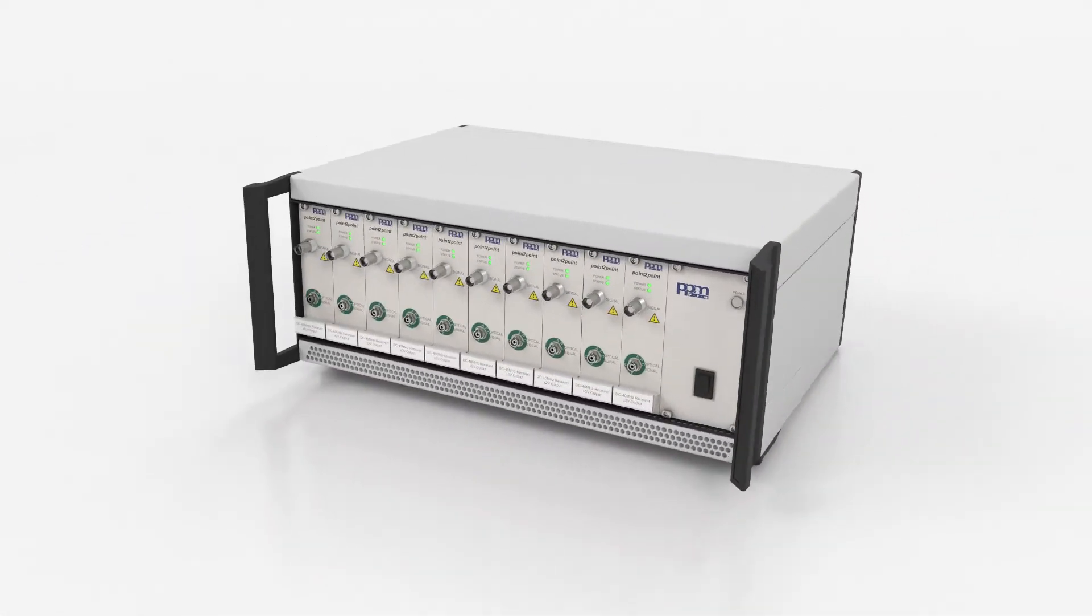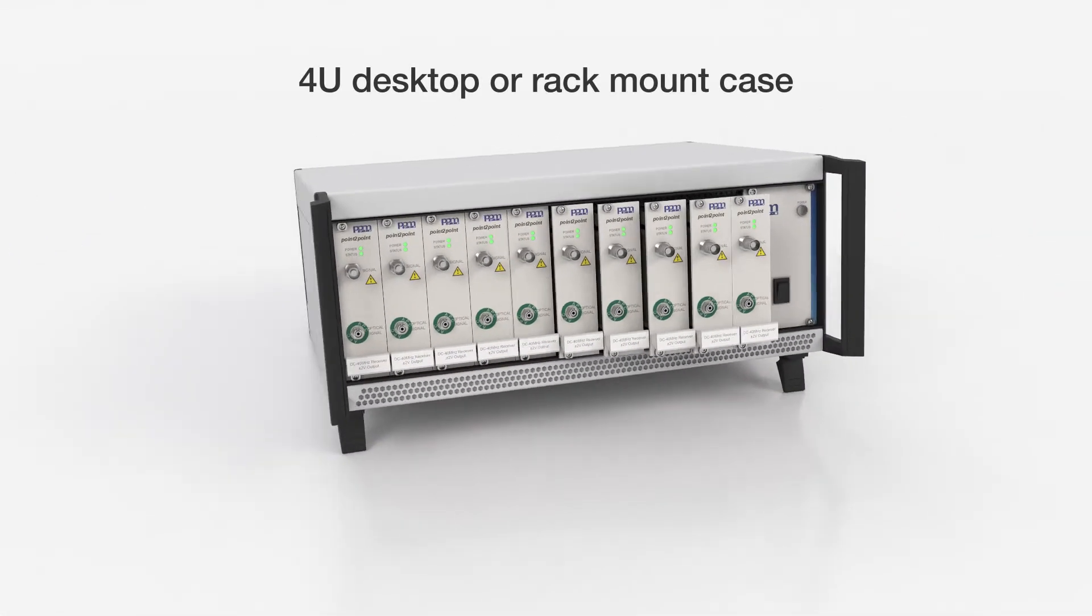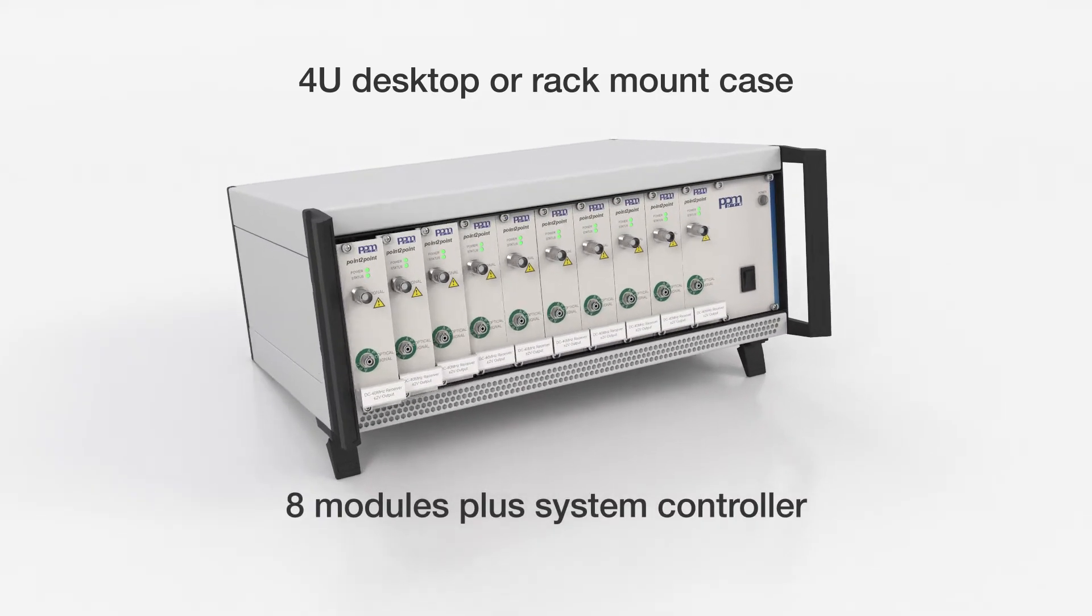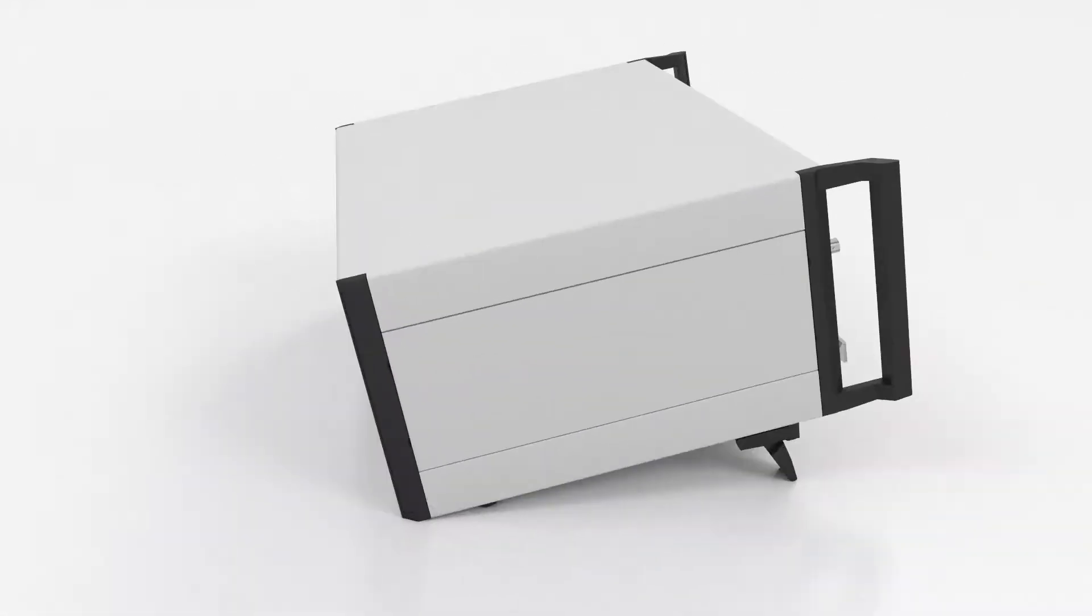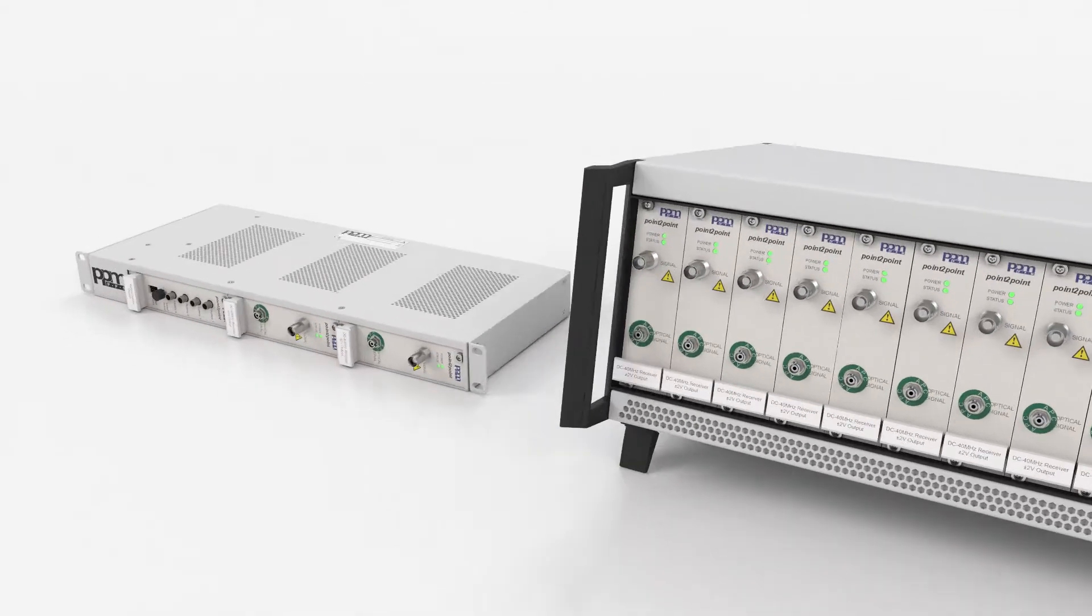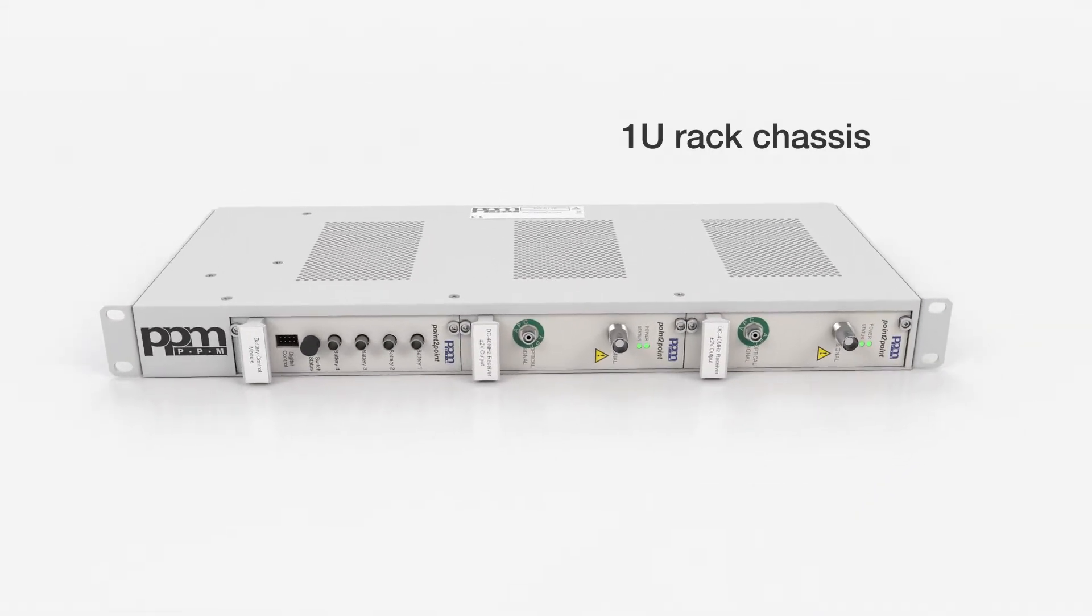A 4U desktop or rack chassis accepts up to 10 plug-in modules. The case incorporates a backplane PCB and power supply. A 1U rack chassis accepts 3 plug-in modules.